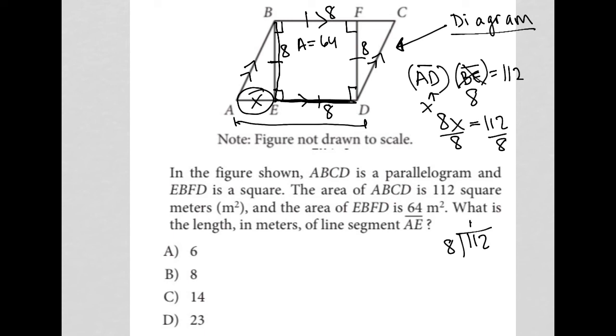8 goes into 11 once. That becomes 8. 11 minus 8 is 3. Bring down the 2, so make 32. 8 times 4 is 32.